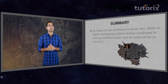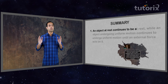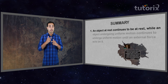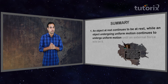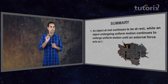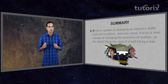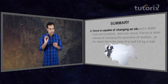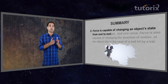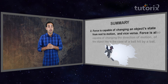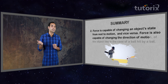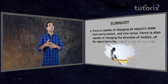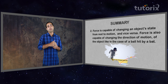For now, let's summarize what we learned in this video. An object at rest continues to be at rest, but an object undergoing uniform motion continues to undergo uniform motion until an external force acts on it. Force is capable of changing an object's state from rest to motion and vice versa. Force is also capable of changing the direction of motion of an object, like in the case of a ball hit by a bat.